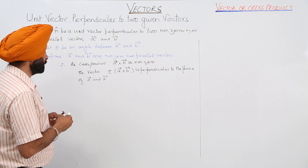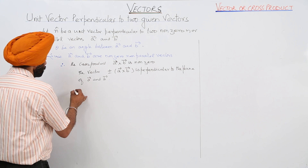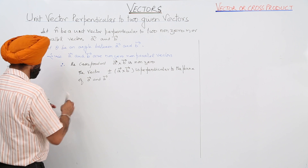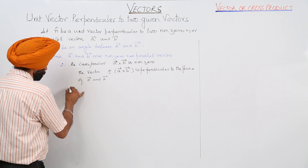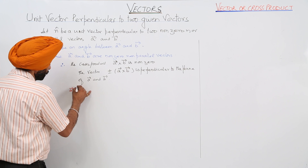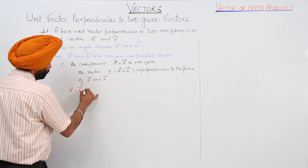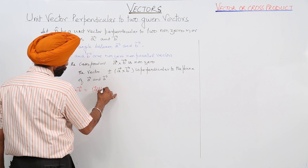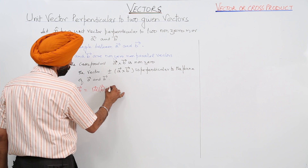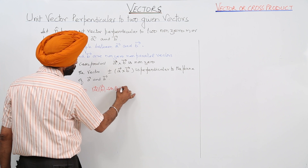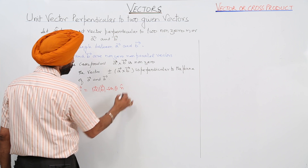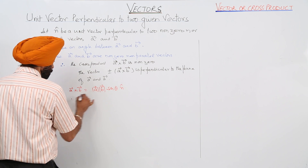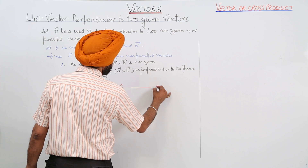Let's derive what we have written. We have vector a cross vector b equal to the magnitude of vector a, times the magnitude of vector b, times sin theta, times unit vector n̂. Let this be Equation 1.